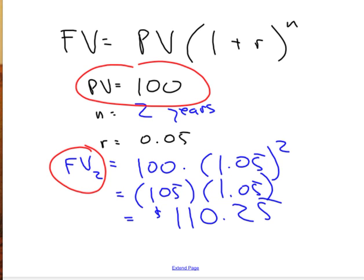So, keep it in the bank for one year at 5%, your 100 turns into 105. Keep that 105 in the bank for another year, it'll be worth 110.25. So, the future value after two years is $110.25.